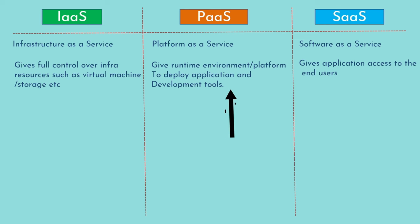In PaaS, they provide a runtime environment and a platform to deploy your application along with development tools. You do not get access to the underlying operating system — you get access to their environment in which you can deploy your application and start using it. In SaaS, they provide an application that you can consume directly as an end user. These are software applications hosted on the cloud and run by the cloud provider — you just use them as the user.